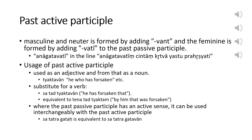The past active participle masculine and neuter is formed by adding 'vant', and the feminine is formed by adding 'vati', to the past passive participle. We saw the past active participle in the Hitopadesha story 'The Brahmin and His Jaar' in lesson 11. The word 'anagatavati' is a past active participle.